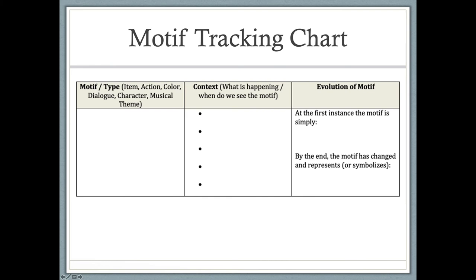As we practice tracking and observing changes in motifs, here is the chart embedded in those practice opportunities. On the left-hand side we identify what the motif is — is it the color red, the color yellow, a musical theme, characters holding hands — and identify what type of motif it is. In the middle section we have bullet points for each occurrence, though the motif may repeat only three times or up to seven or eight. With each bullet point, we write down what is happening when we see the motif.